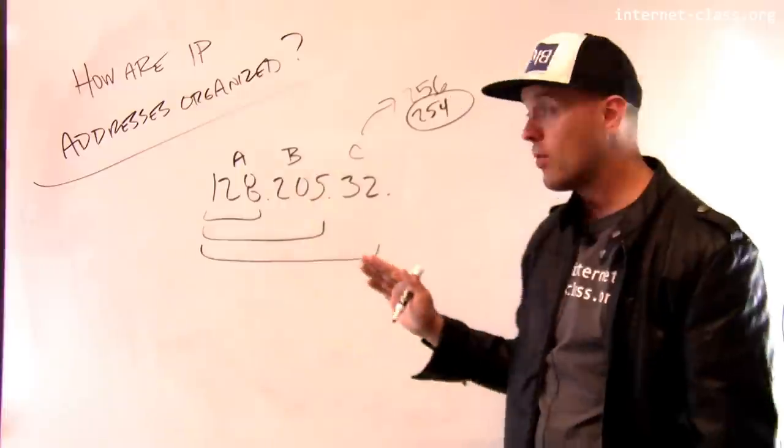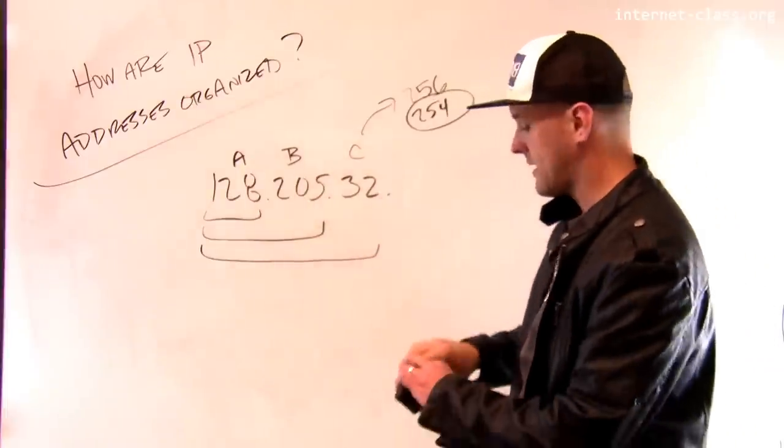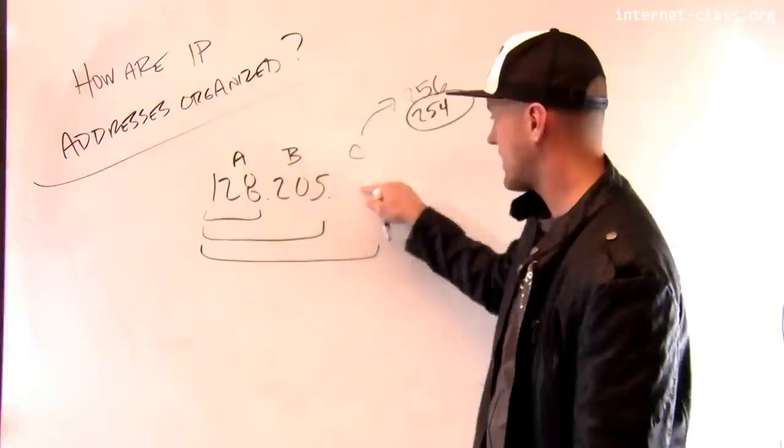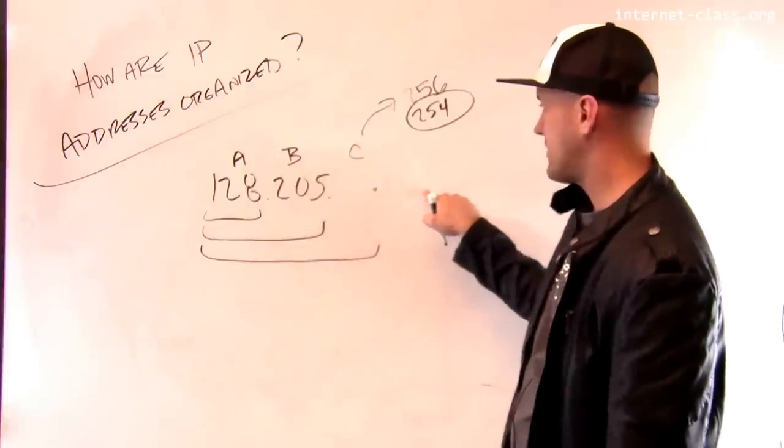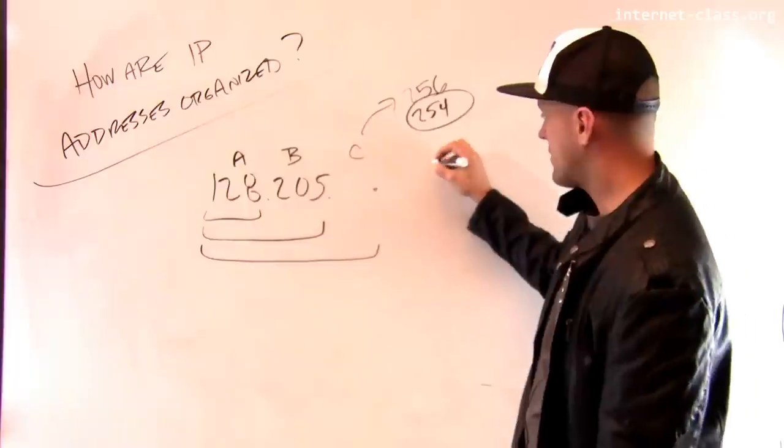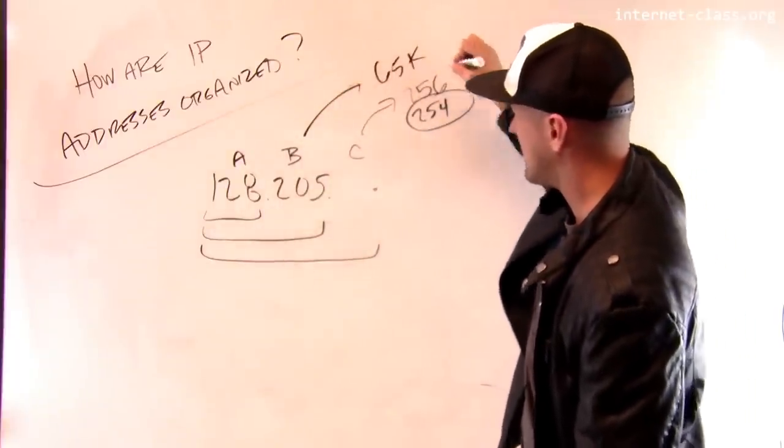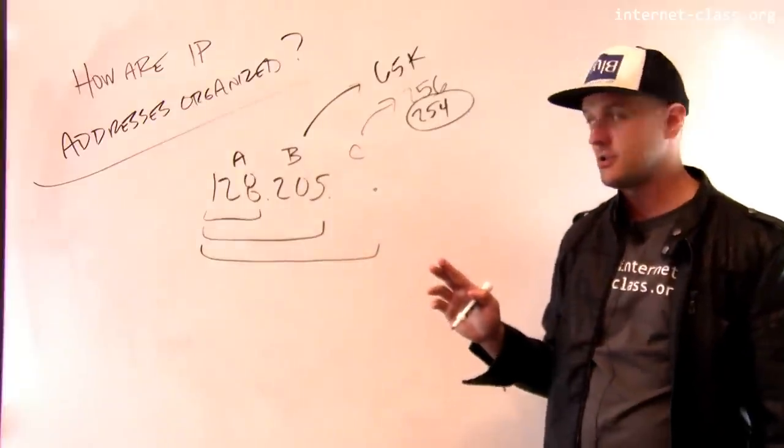A class B network has more because there's more options back here. So for a class B network, I have 256 choices I can put here, and I have 256 choices I can put here. And so it turns out a class B network has something like 65,000 host names that you can attach to it.